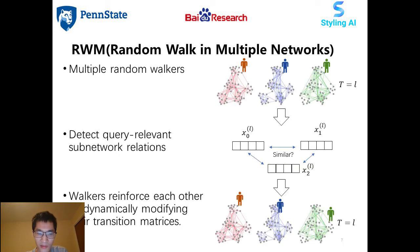To address these challenges, we introduce a novel random walk model for multiple networks. We use multiple random walkers starting from the query, one for each network. The query-relevant sub-network relations are evaluated from proximity scores. Then these walkers reinforce each other in the following steps according to these relations, updating visiting probability vectors by aggregating other walkers' influences at each step.